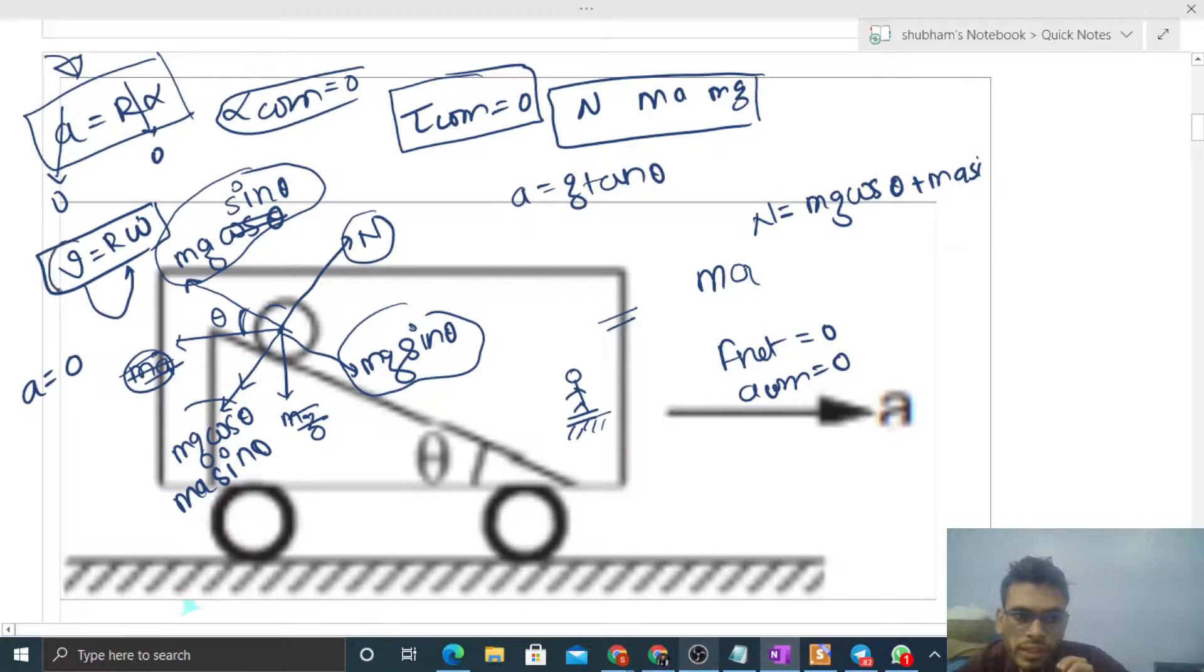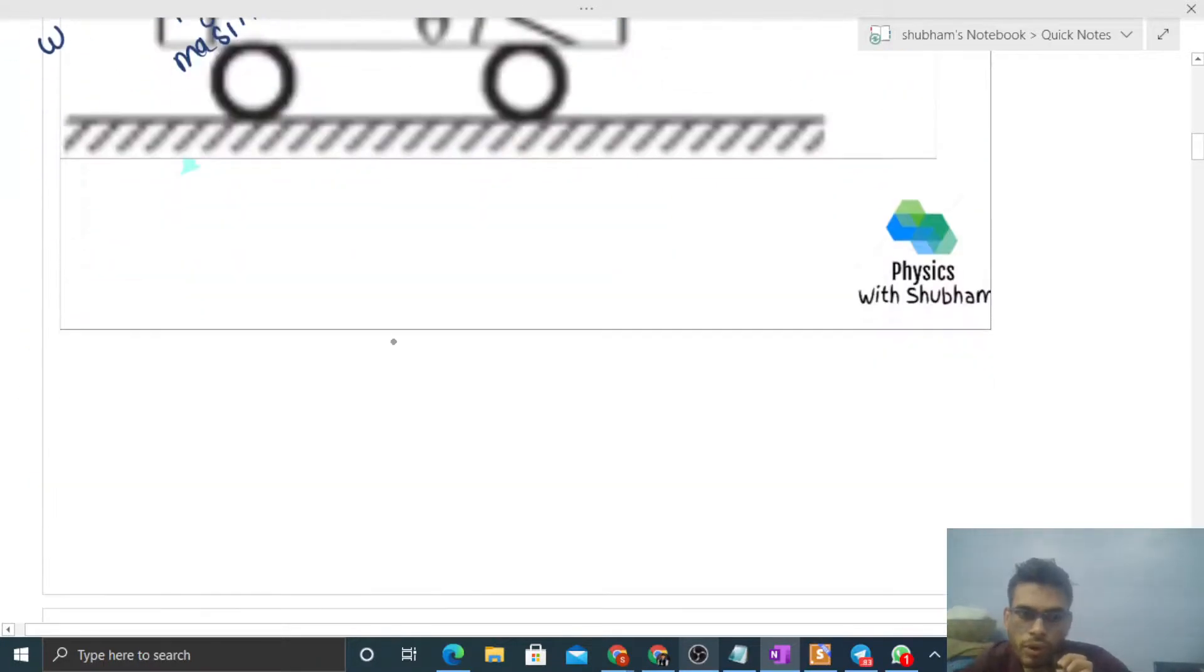Think of it like this: initially v equals r omega. Now acceleration of center of mass is zero, meaning velocity of center of mass becomes constant. Now alpha is zero, meaning omega also becomes constant. So v is constant and omega is also constant. This means the body, which you initially provided v and omega, they will remain constant for this body.